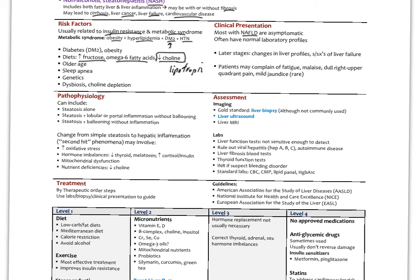The pathophysiology can be the steatosis alone, steatosis with lobar or portal inflammation without ballooning. These are all things that can be seen on histology and biopsy. Then steatosis with ballooning without inflammation. Change from simple steatosis to the inflammation in NASH involves what we call a second hit phenomenon. Maybe increased oxidative stress, hormone imbalances like low thyroid, low melatonin, high stress hormones and insulin, mitochondrial dysfunction. And again, nutrient deficiencies have all been postulated as why we go from NAFLD into NASH. What does that next trigger?